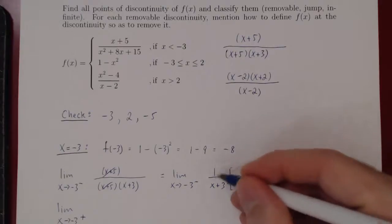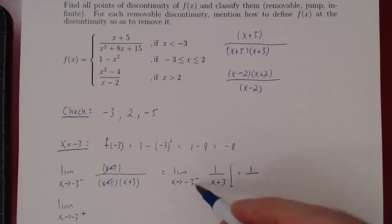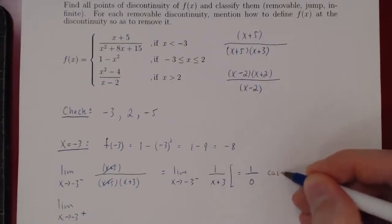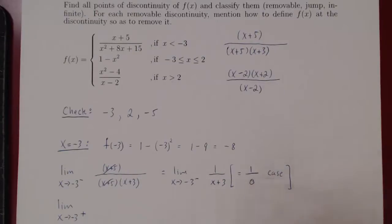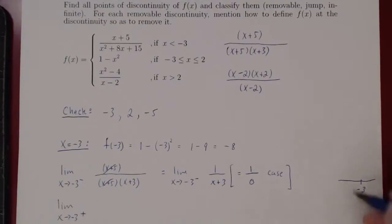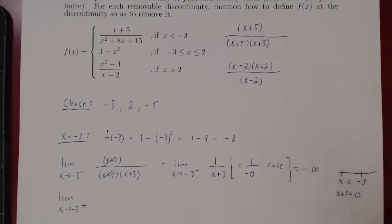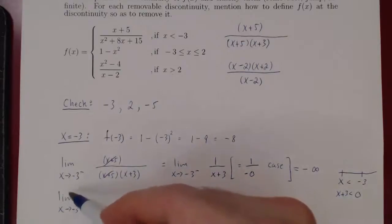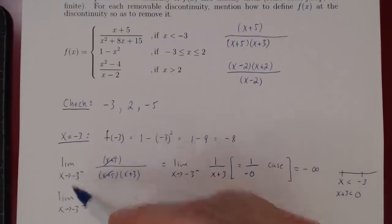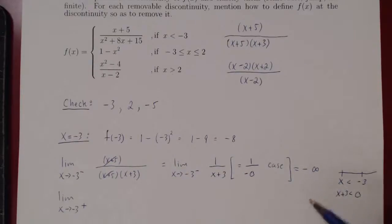As x approaches negative 3, x plus 3 approaches 0, so we have a 1 over 0 case. Since x approaches negative 3 from the left, x is slightly smaller than negative 3. Adding 3 to both sides gives x plus 3 is less than 0, so x plus 3 is negative. We have a 1 over negative 0 case, which gives us negative infinity. So as we approach negative 3 from the left, the function blows up to negative infinity — we already know we have an infinite discontinuity.